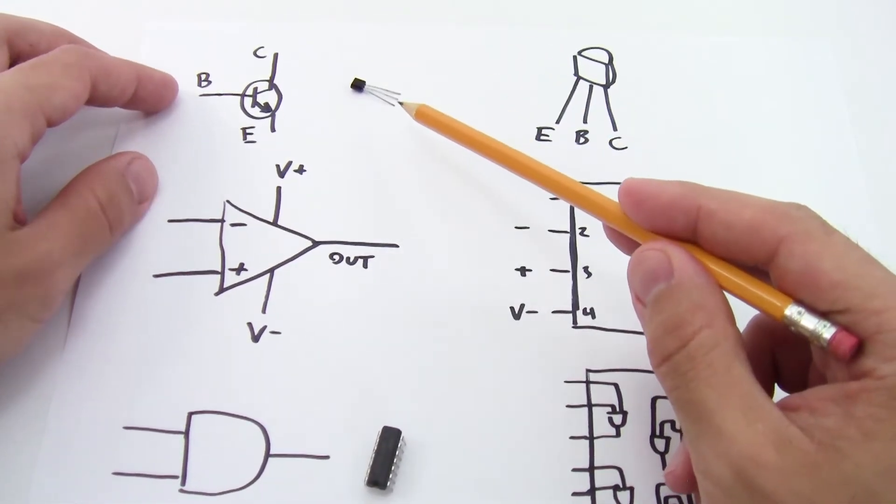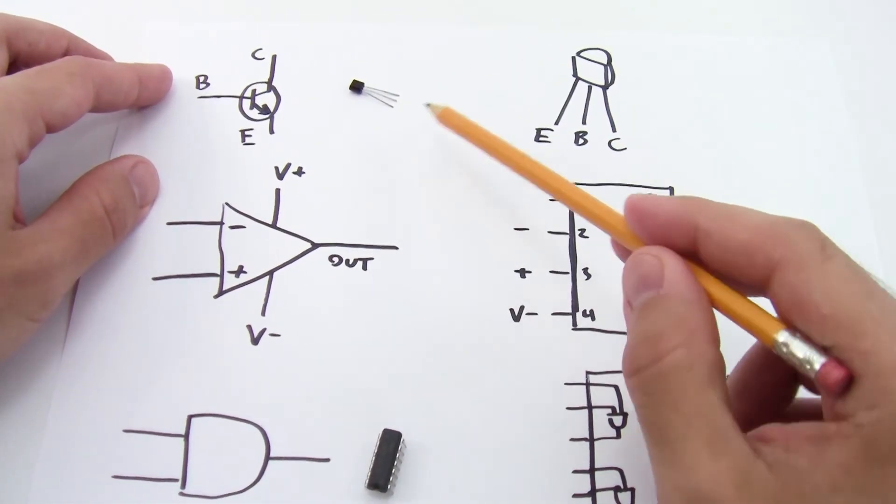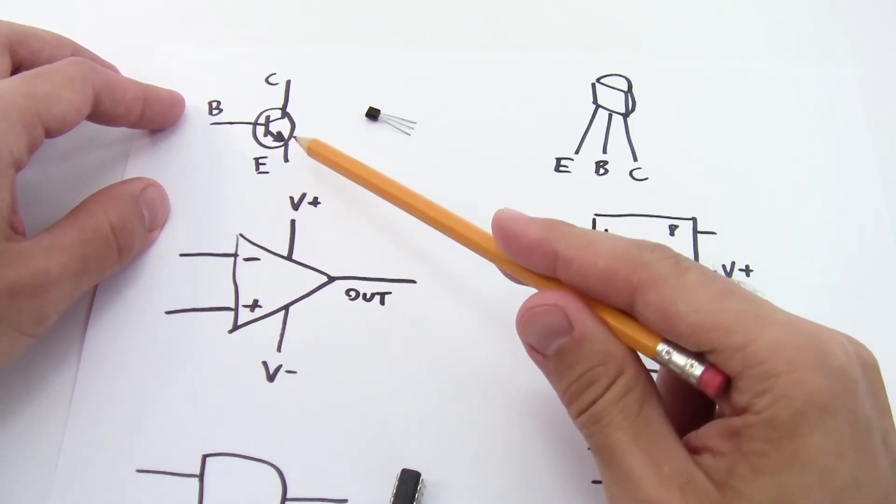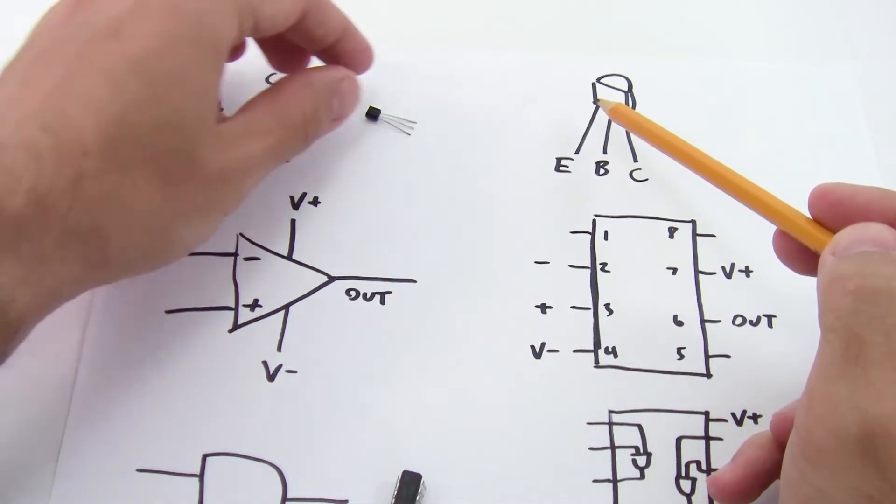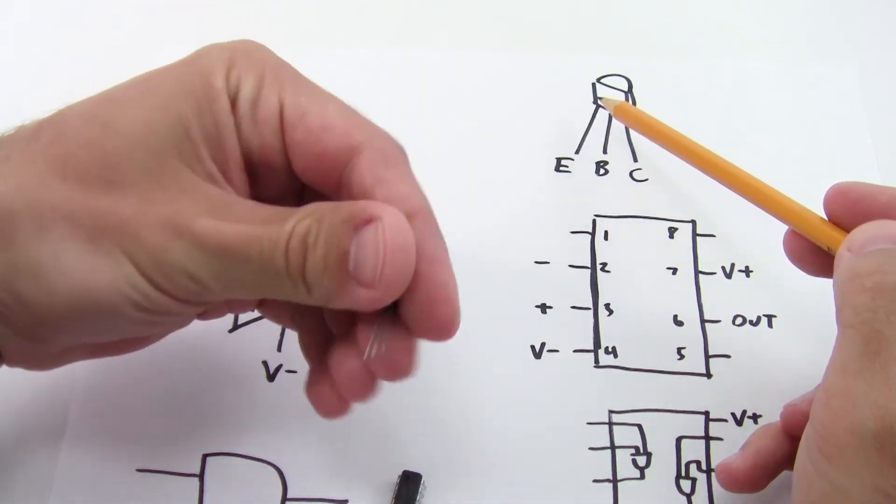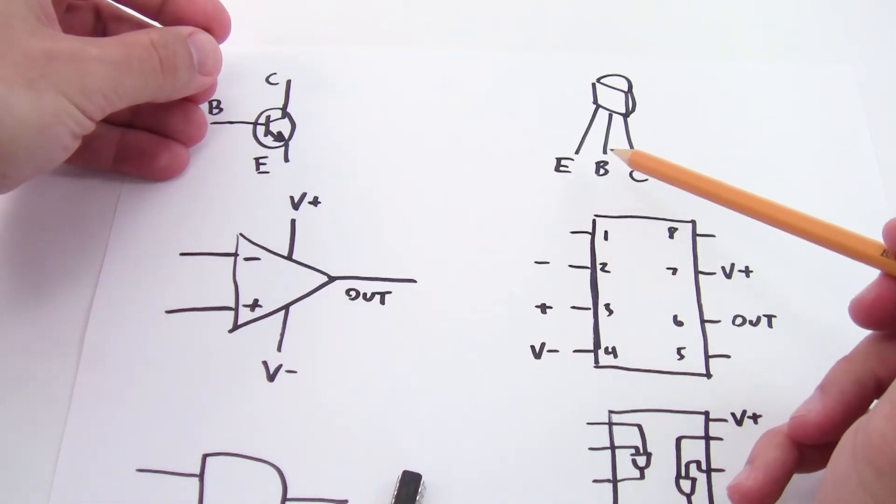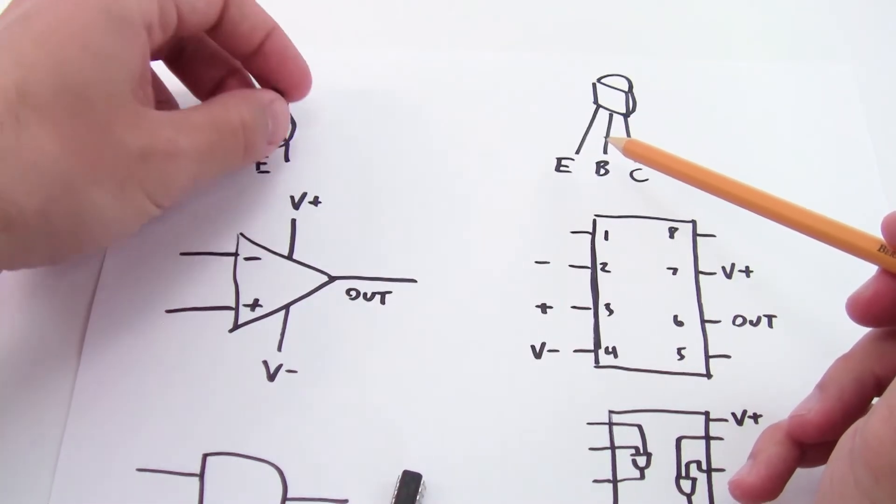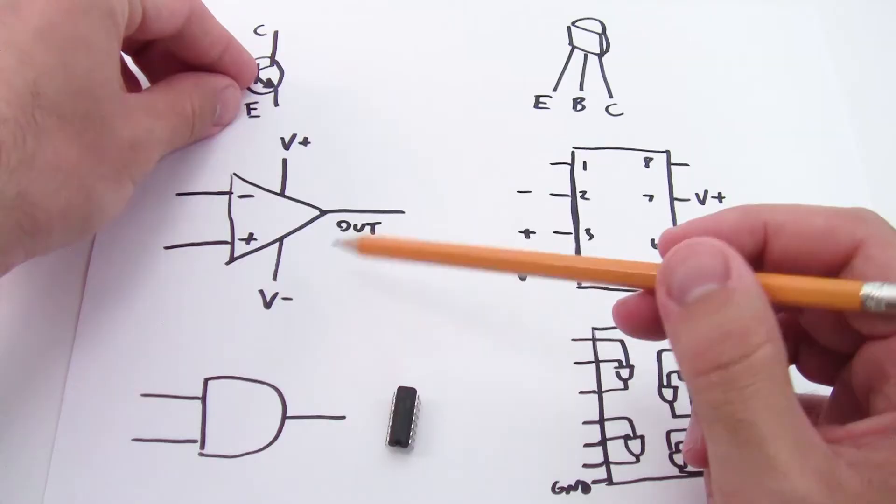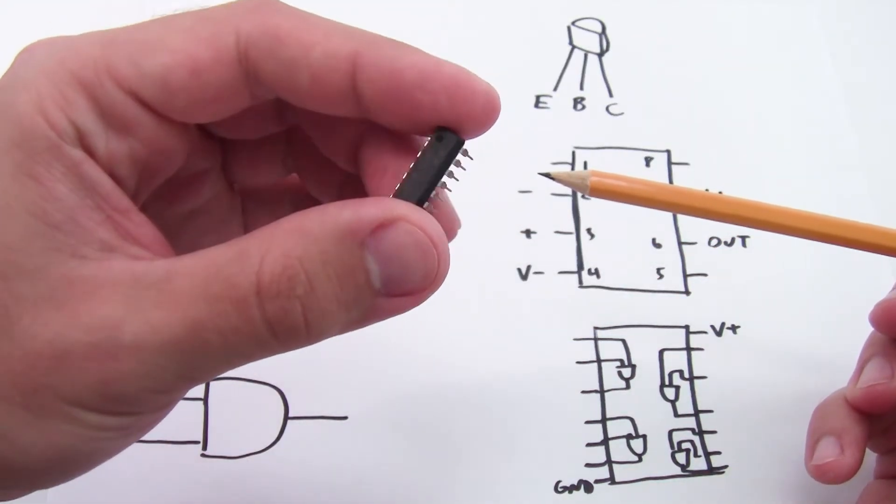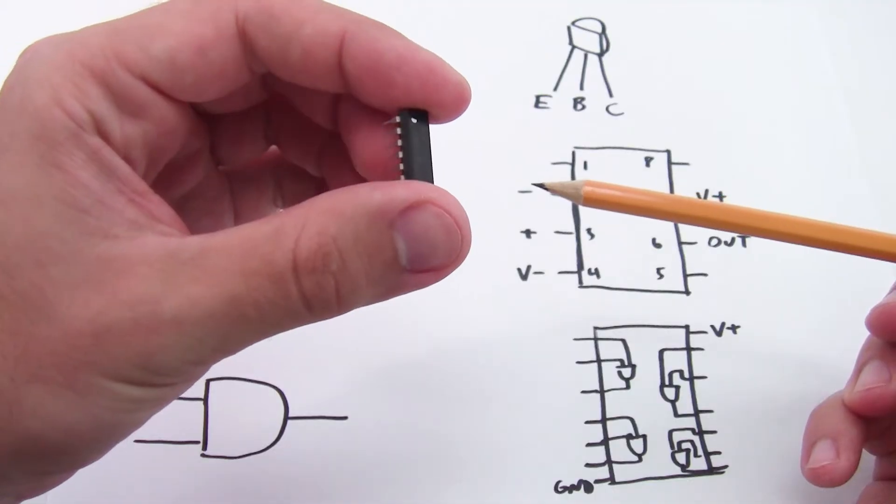So the transistor comes in this little package with three leads instead of two: the base, the collector, and the emitter. So here's the circuit symbol, and then here's kind of my drawing of the physical package which is supposed to represent this thing. So depending on which way you have this oriented or which way you have it flipped around, you could get the pins reversed. You have to be careful about that. And then the operational amplifier and the AND gate both come in integrated circuit packages. So we'll talk about these a little more next.